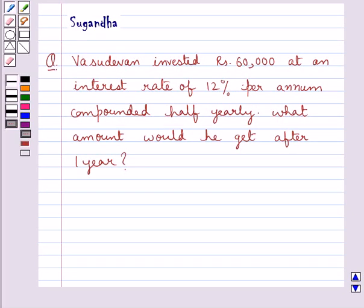Hello and welcome to the session. Today I'll help you with the following question. The question says, Vasudevan invested Rs. 60,000 at an interest rate of 12% per annum, compounded half yearly. What amount would he get after one year?